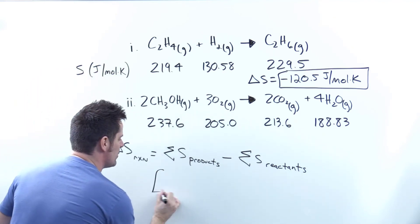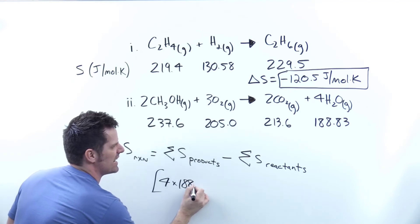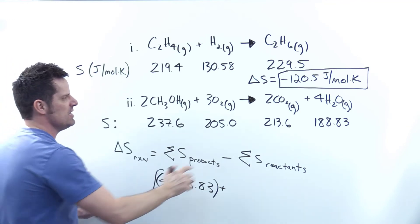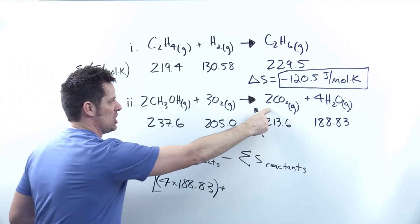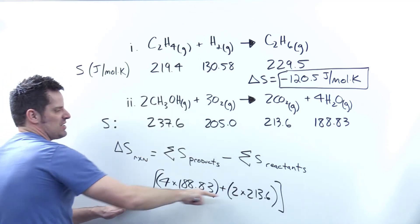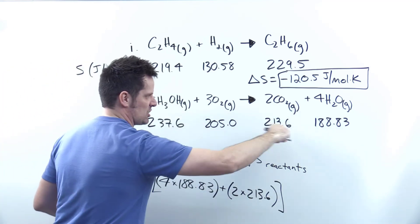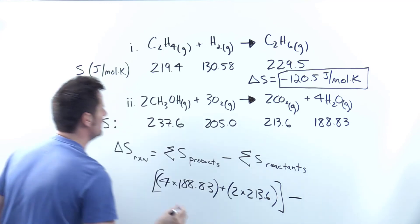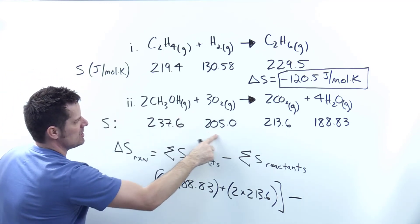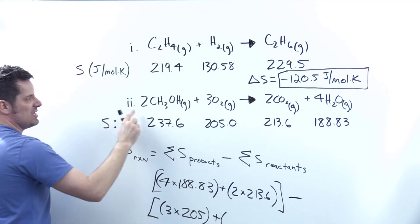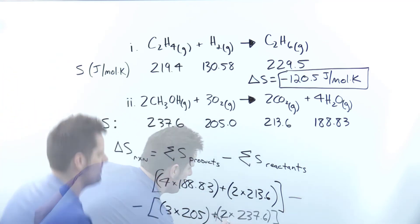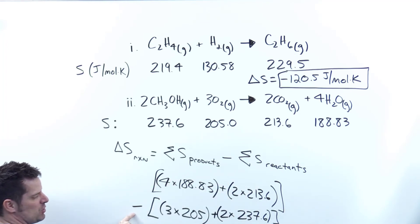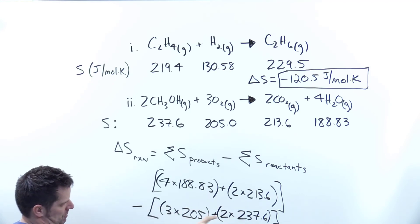I'm going to take 188 times four, so I'll write four times 188.83, and then I'm going to add to that the 213.6 times two because I've got a two coefficient in front of that. This is the sum of all the product entropies. Then I'm going to subtract from that the analogous term for my reactant entropies: three times 205 for my O2, plus two times 237.6. These are my product entropies combined, and I'm going to subtract from it the reactant entropies all combined.